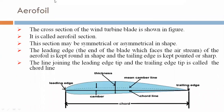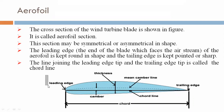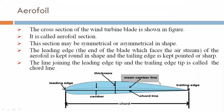Now we are discussing the airfoil. The cross section of the wind turbine blade is called the airfoil section. It includes the leading edge, the thickness, the mean camber line, the chord line, the camber, and the trailing edge.